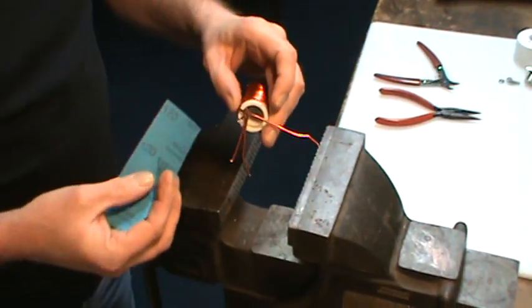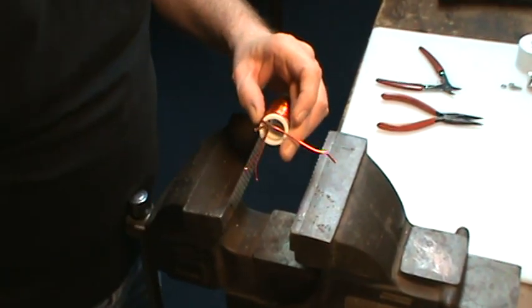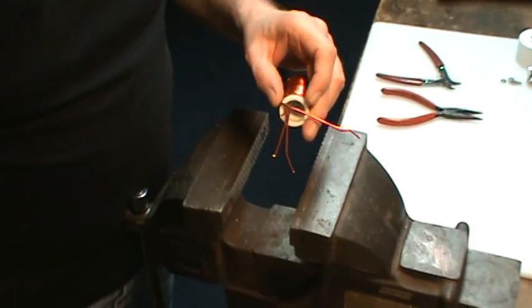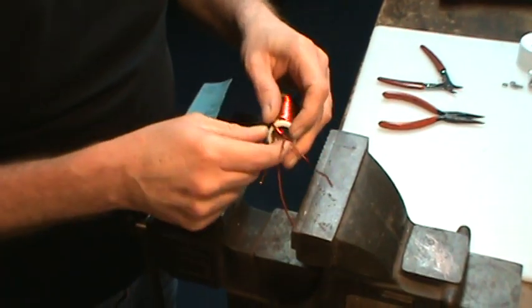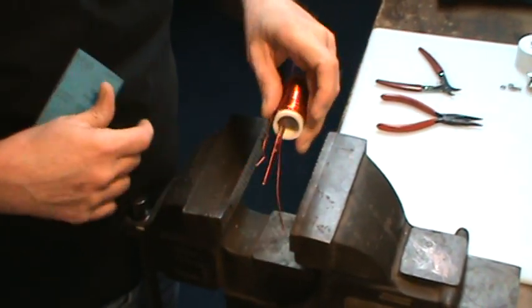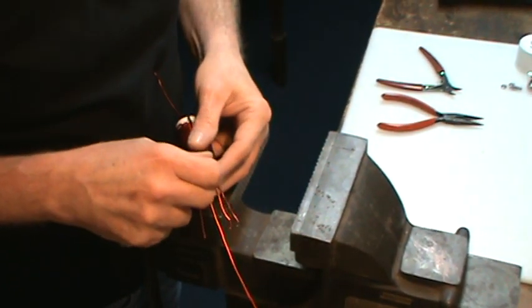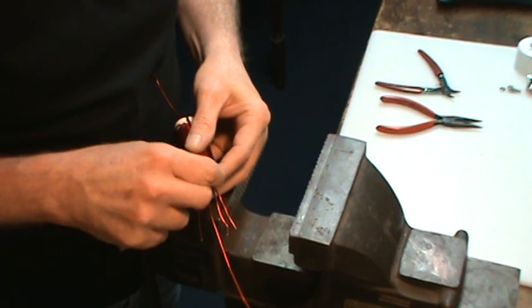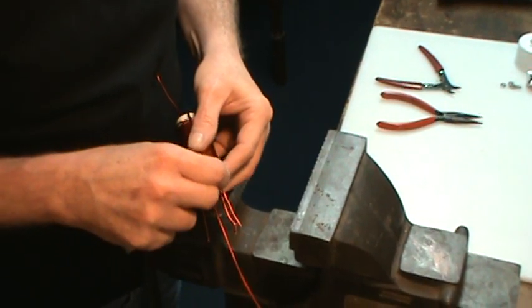So I've got a little piece of sandpaper here, also have a little file in case I want to try that. Let's see. Just bend this wire back off like this and sand some of this enamel coating off of this end down here.